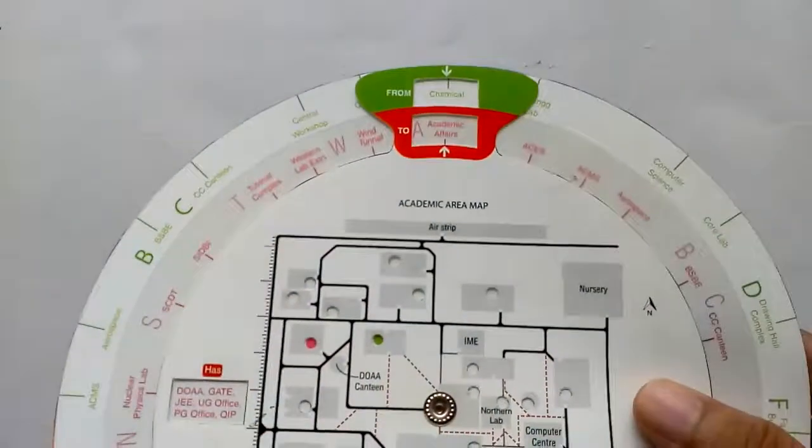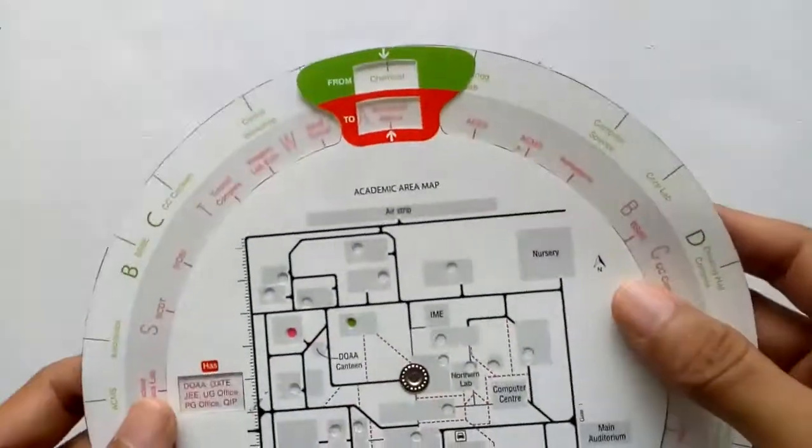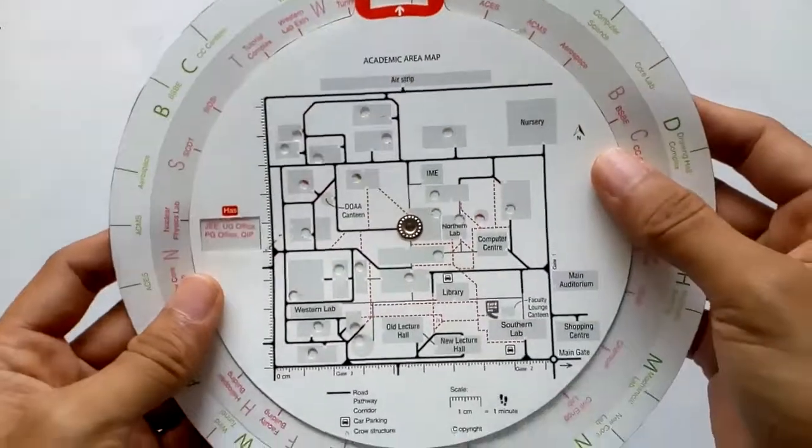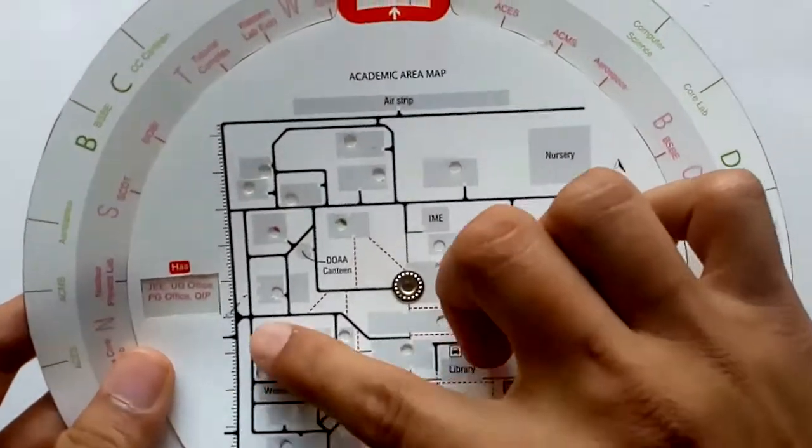Additional information about the destination is shown in the HAS box. The scale gives a rough estimate of the time it takes to walk between the two selected places.